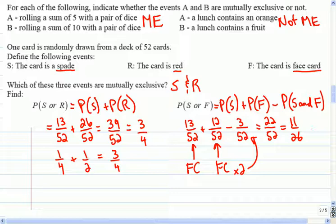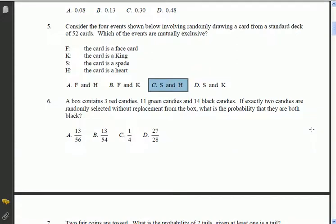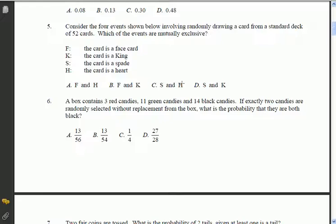Okay, so let's just take a look here at a previous provincial exam question. Okay, so number five says, consider the four events shown below involving randomly drawing a card from a deck of 52. Which of the events are mutually exclusive? So, let's compare them and see which ones we think are a good candidate. Okay, if you're a face card, can you be a heart? Yeah, it's possible to be a face card like the king of hearts. So it's definitely not A.